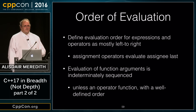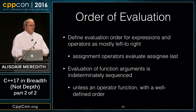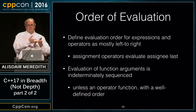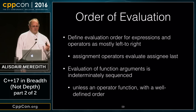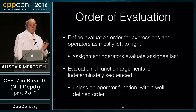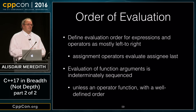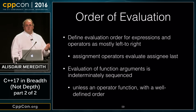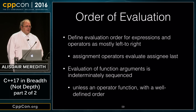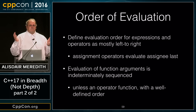For function call operators, the order of evaluating expressions within a function call — say f(a, b, c, d, e) — the evaluation of a, b, c, d, e is now indeterminately sequenced. That's progress since C++14, where they were actually unsequenced with potential data races. Now there is a sequencing, but whether it's left-to-right, right-to-left, or any permutation, you don't know — that's known only to the compiler vendor.